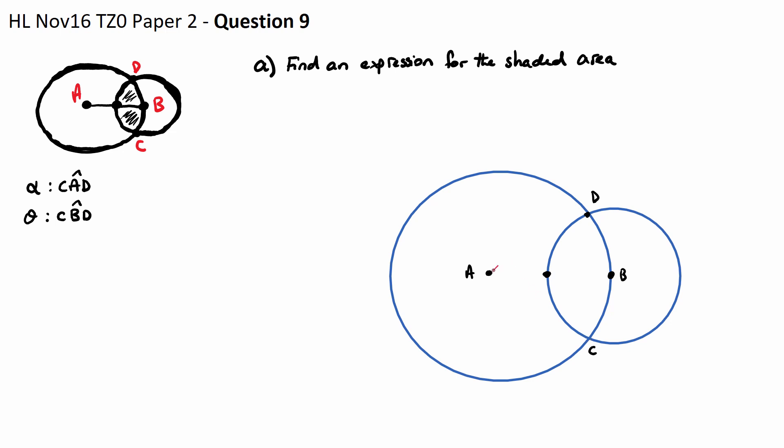Picture this triangle here. This will be alpha. Then theta is the measurement of CBD, so if this was a triangle here, this would be theta. Now in part a it says find an expression for the shaded area in terms of alpha, theta, and r.